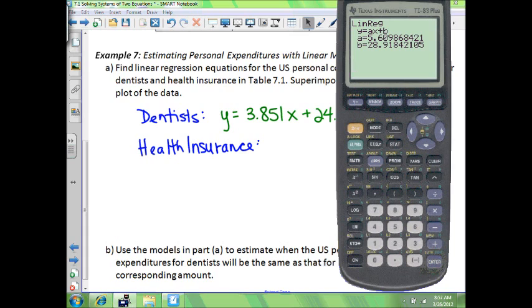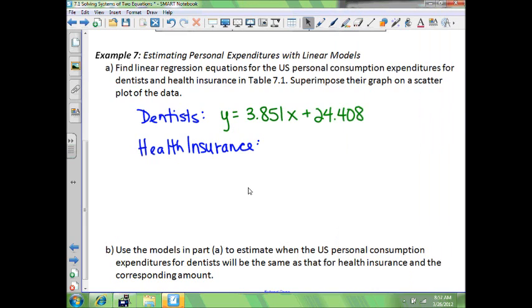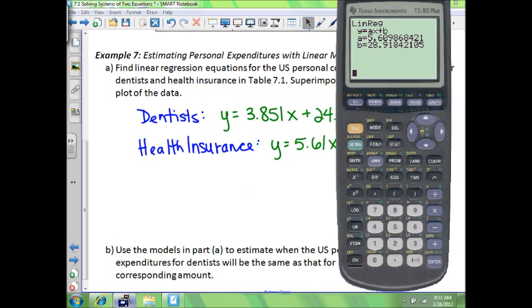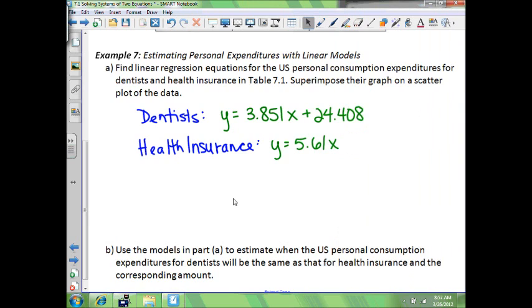And again, by doing that, it automatically puts it into your y equals. So your equation y equals 5.61x plus 28.92. So there's your equation for health insurance.